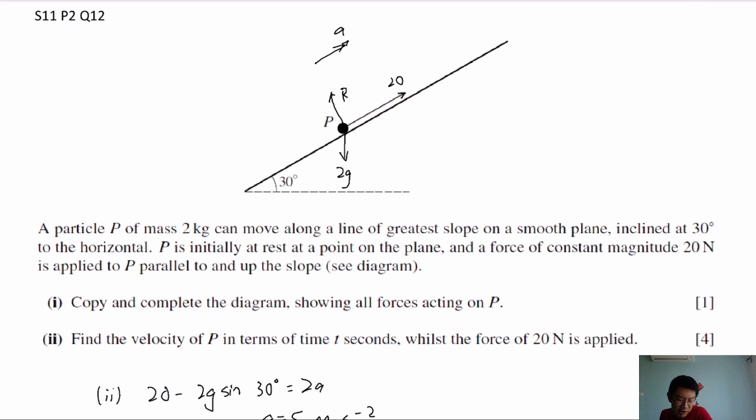Okay, let's start. For the first question, we have particle P, mass 2 kg, moving along the slope. The angle is 30 degrees and P is initially at rest at a point on the plane, with a force of 20 N applied to P parallel to and up the slope. First, complete the diagram showing all the forces.